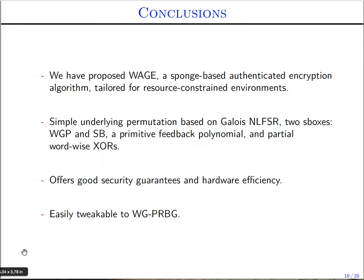To conclude, we have proposed WAGE, a sponge-based authenticated encryption algorithm mainly designed for hardware and tailored for resource-constrained environments. The underlying WAGE permutation is simple and consists of a Galois nonlinear feedback shift register with two s-boxes — the WG permutation and SB s-boxes. The linear layer consists of a primitive feedback polynomial and partial wordwise XORs. It offers good security margins as well as good hardware efficiency. We also showed how to configure the WAGE permutation to a WG-based pseudorandom bit generator, which is much more efficient than the sponge-based PRNG.